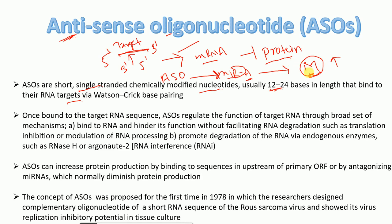To clarify: microRNA-A is inhibiting mRNA-M. If we design antisense oligonucleotides to target microRNA-A, then microRNA-A is not available to inhibit mRNA-M production, so the synthesis of mRNA-M will be increased.